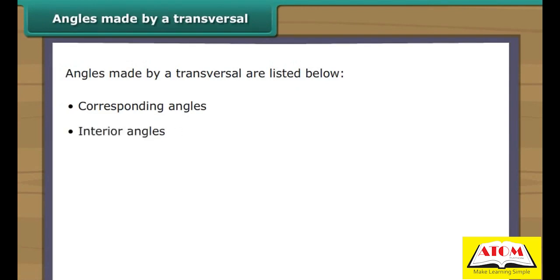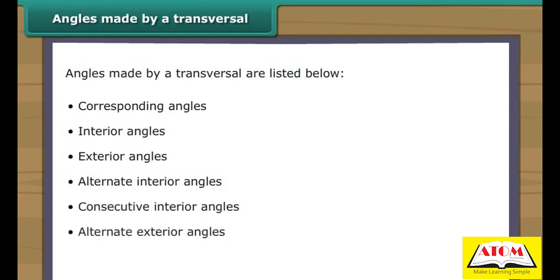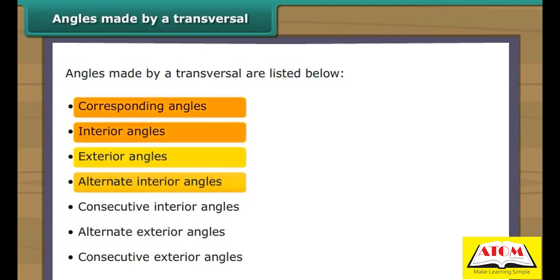Angles made by a transversal. Transversals form seven types of angles. They are described as corresponding angles, interior angles, exterior angles, alternate interior angles, consecutive interior angles, alternate exterior angles, and consecutive exterior angles. Click each button to know more about the above mentioned angles.